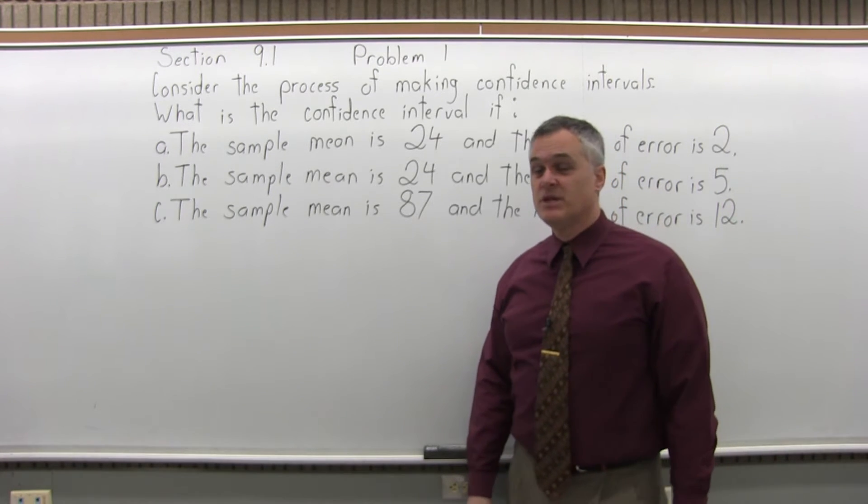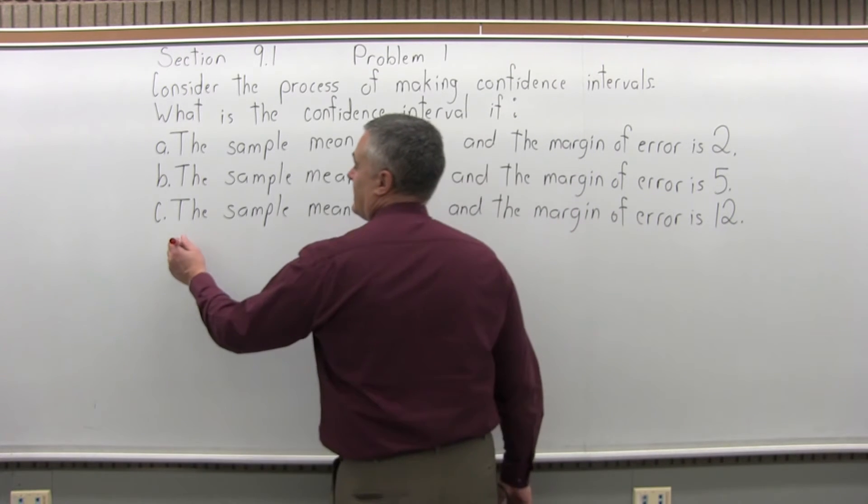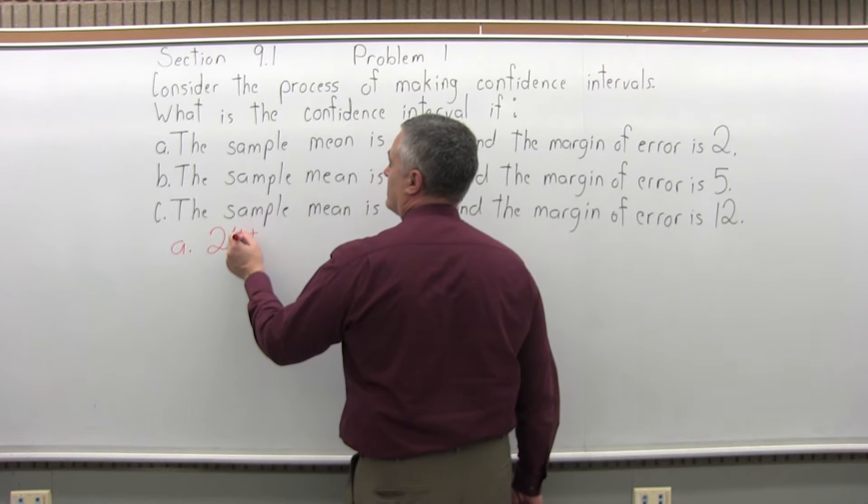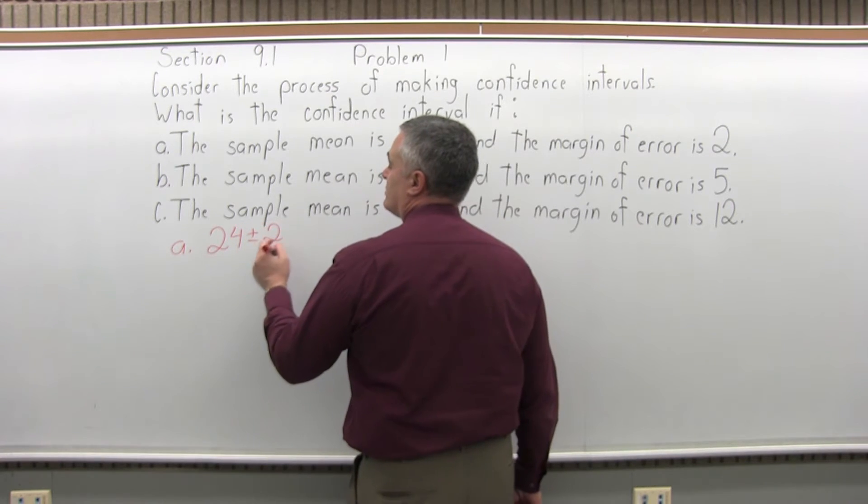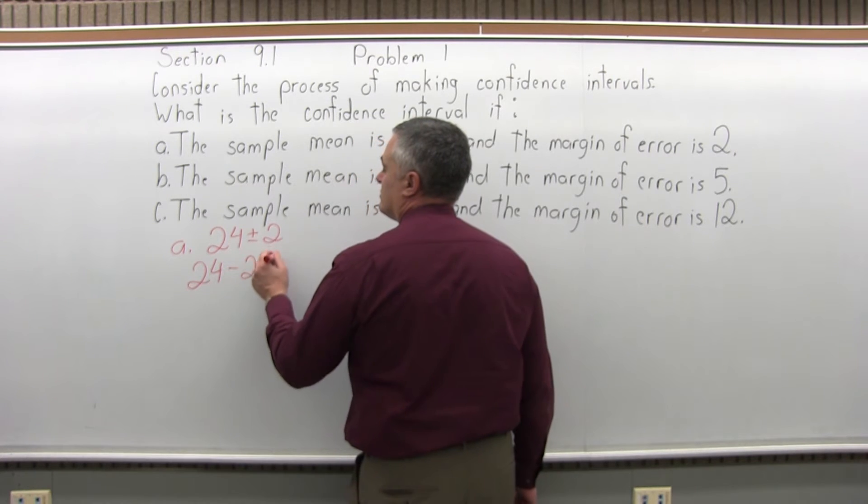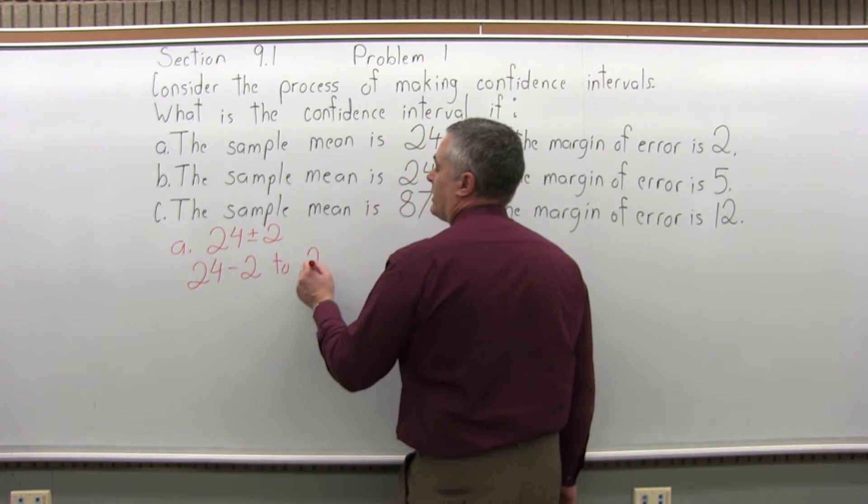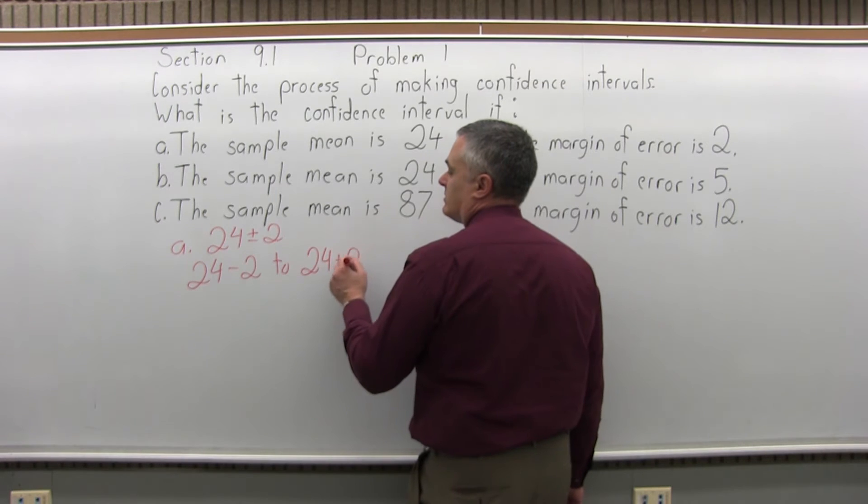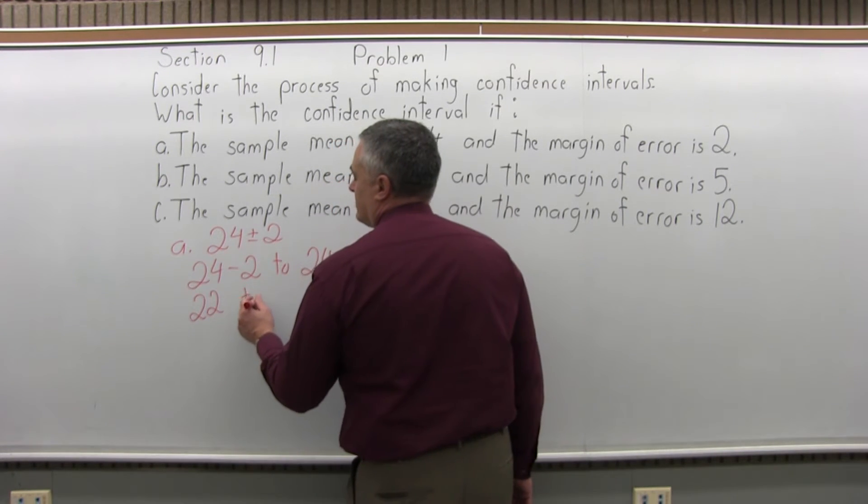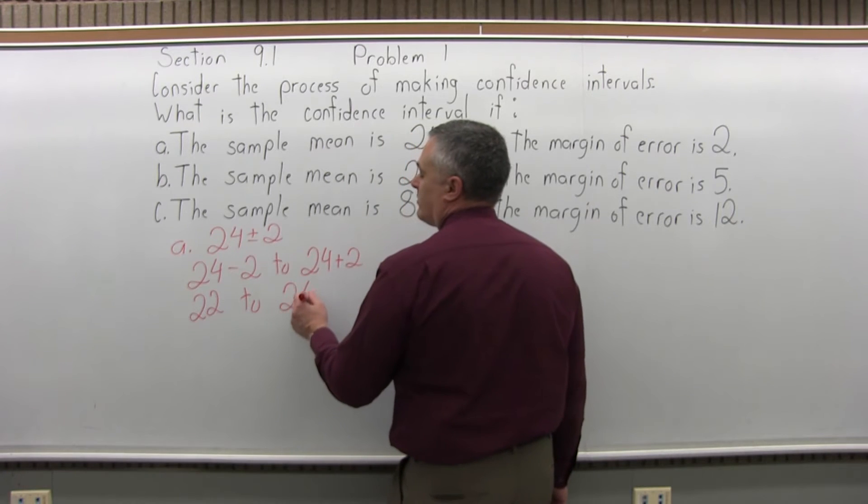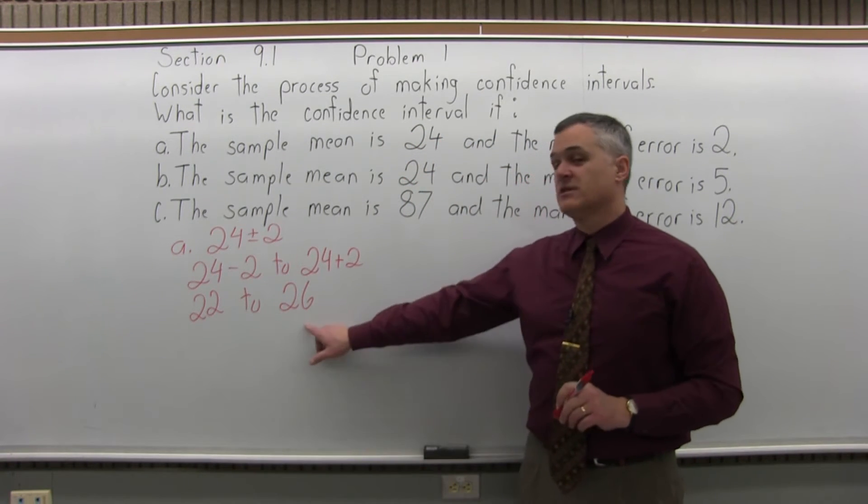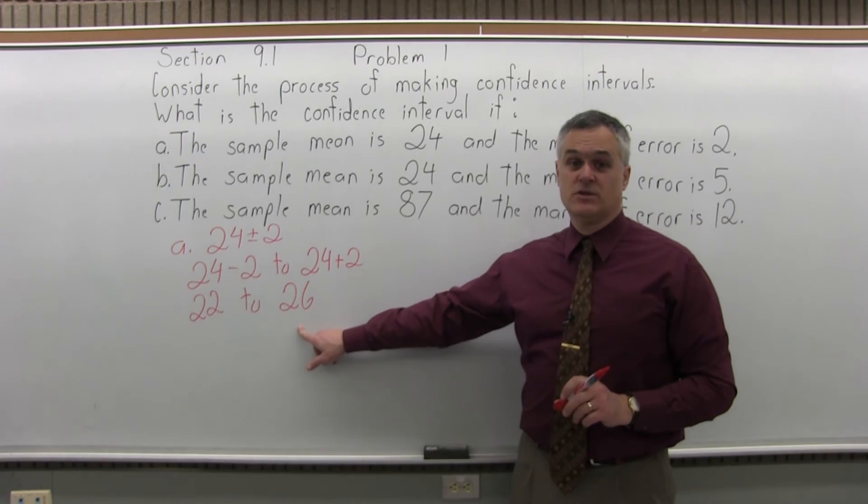So I have a sample mean of 24 and the margin of error is 2. So it will be 24 plus or minus 2. So that's going to give you 24 minus 2 to 24 plus 2. So 24 minus 2 would be 22 to the upper level 24 plus 2 will be 26. So the answer for part A, your confidence interval would be from 22 to 26.